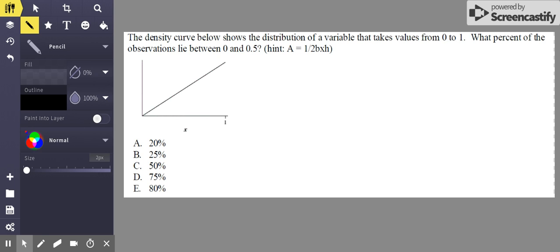And then they give you a little hint and it's the area equation for the area of a triangle. So this might be a little confusing at first because it doesn't look like a curve, it's just this straight line, but you just have to remember that a density curve can take on any shape, really, depending on the variable information they give you. But the area underneath it is still 1 regardless of the shape.